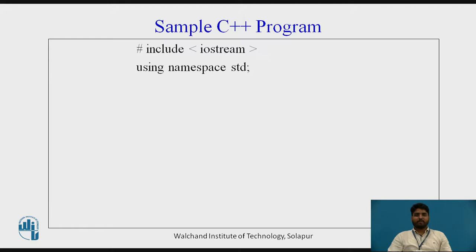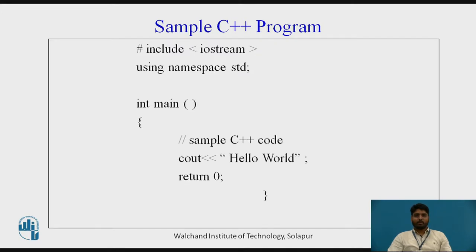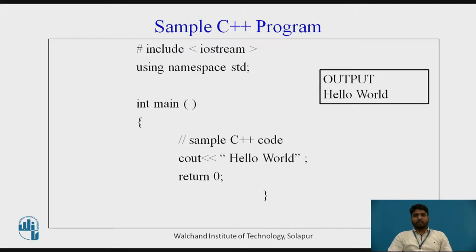The first line of the program is #include <iostream> and using namespace standard. Then int main, followed by the program inside the braces. Double slash for a comment — sample C++ code. Cout, insertion operator, then double inverted commas, hello world, semicolon, return zero, semicolon. The output for this program will be 'hello world'. We will see each and every statement in detail in the further slides.